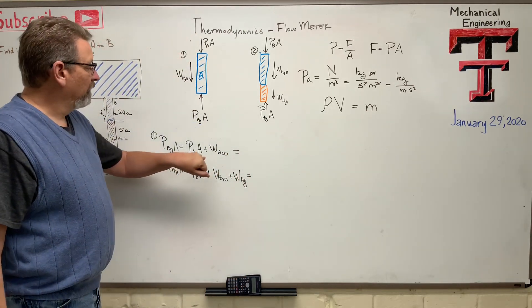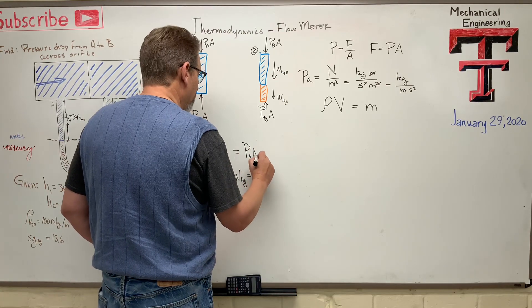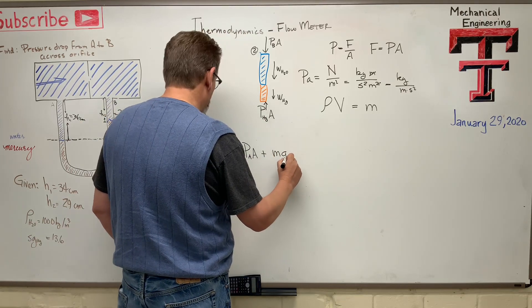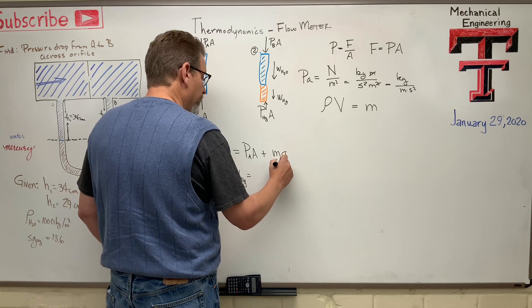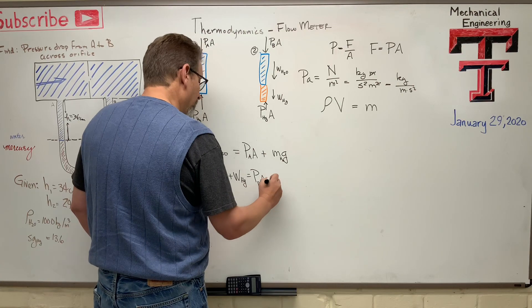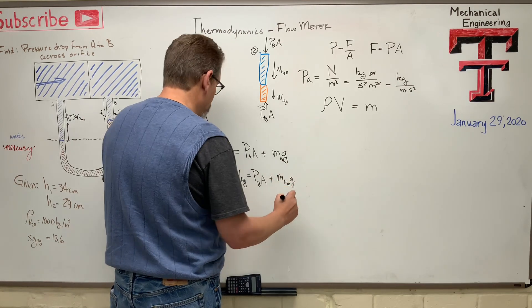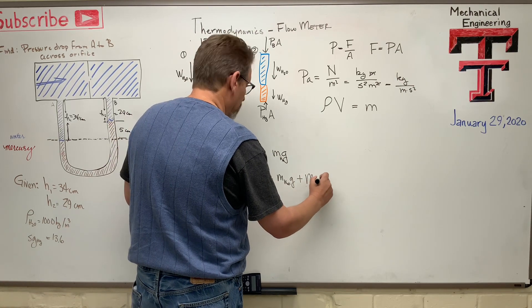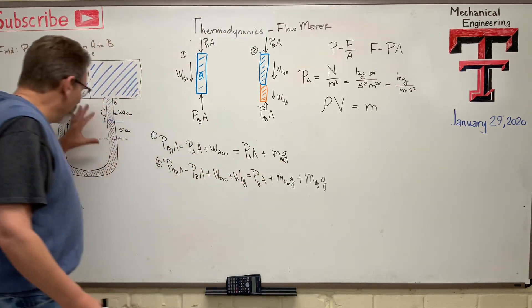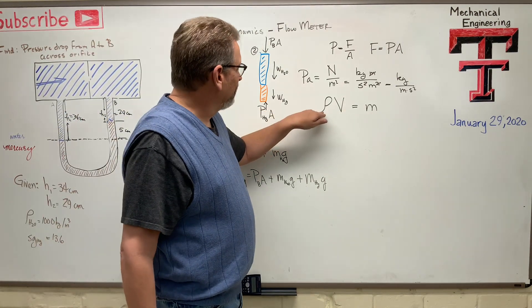And then equation number two is for this guy. Same thing. P_HG times A equals P_B times A plus W_H2O plus W_HG. Let's see if we can expand this. What is weight? Weight is just MG. So we have P_A times A plus MG, and this is H2O. P_B times A plus the weight, again, M_H2O times G, plus M_HG times G. And then what is mass? I mean, we don't know the mass, so I've got to just write it in a different form, but I'm doing all these kind of densities over here, and so I'm just going to rewrite mass as rho times V.